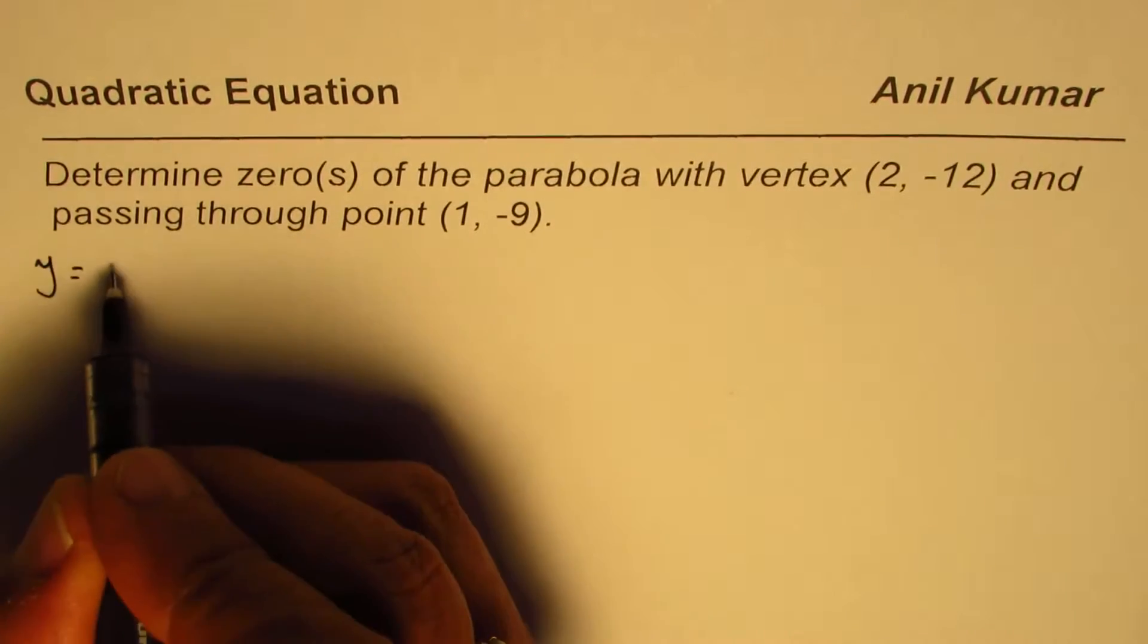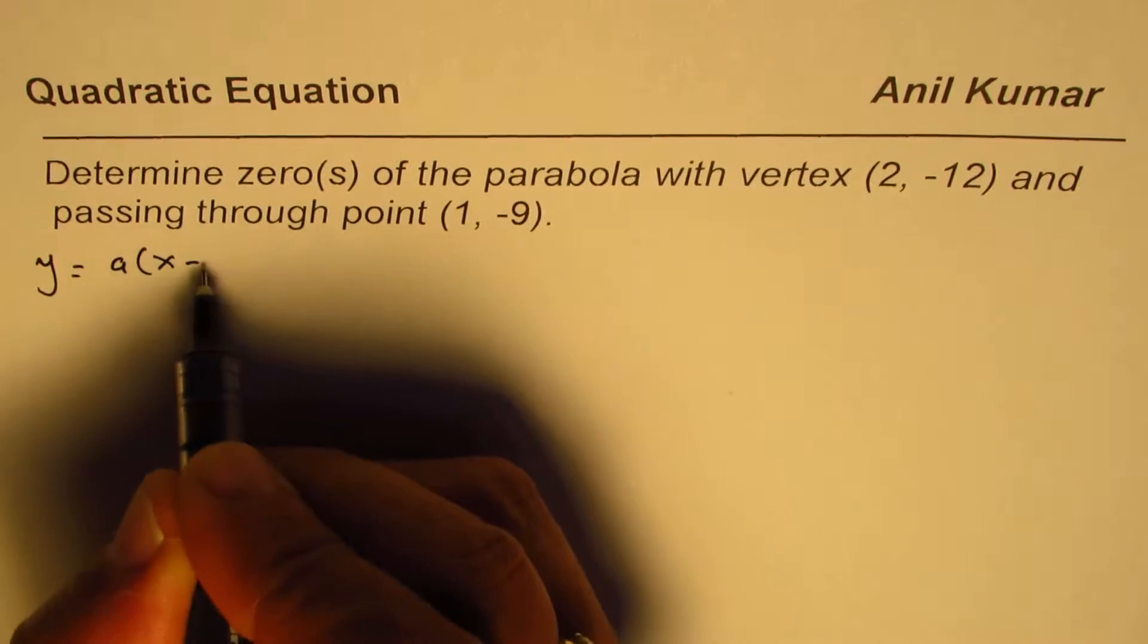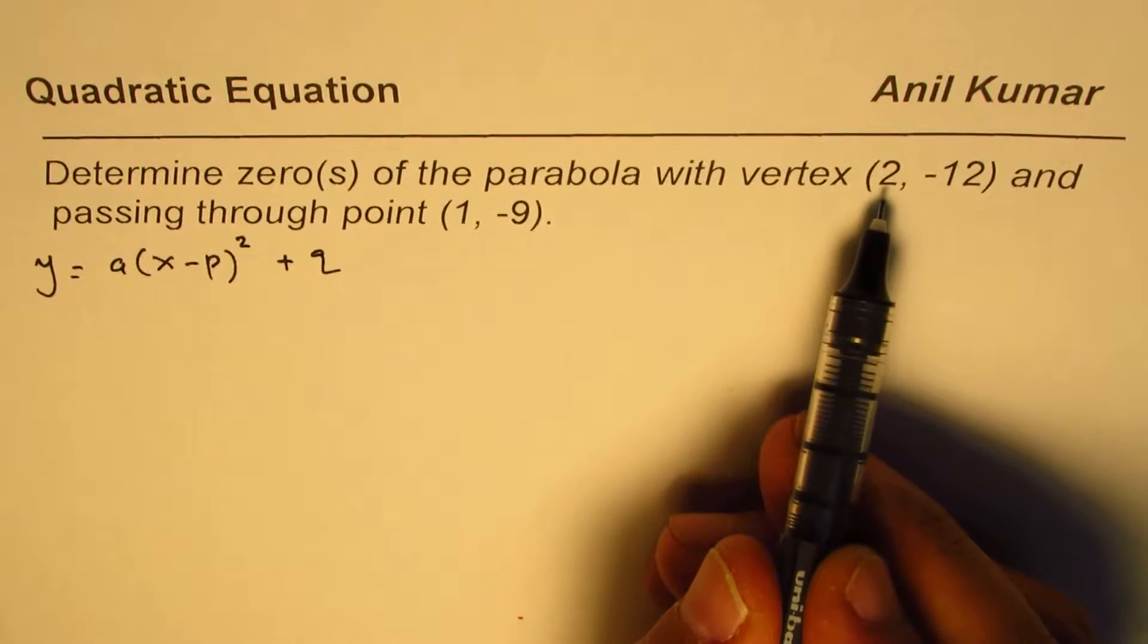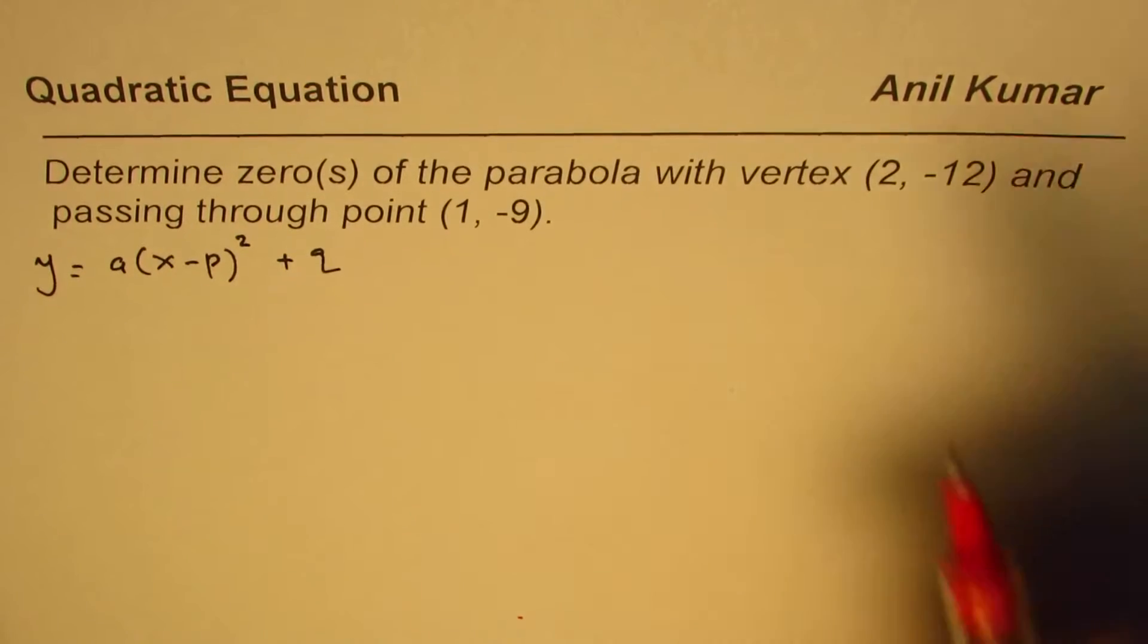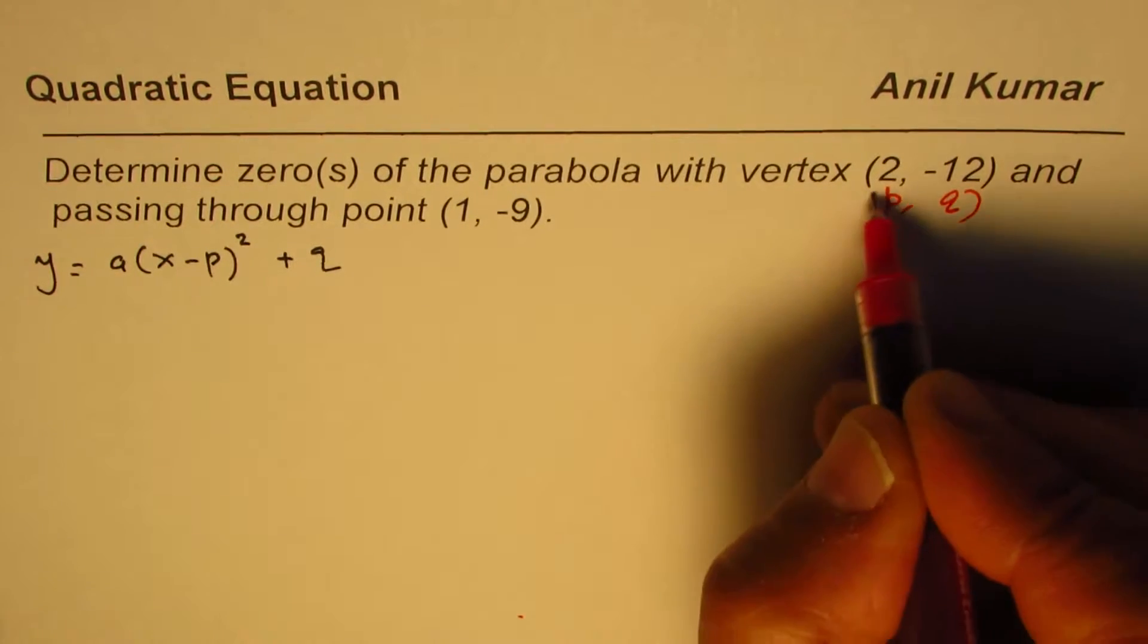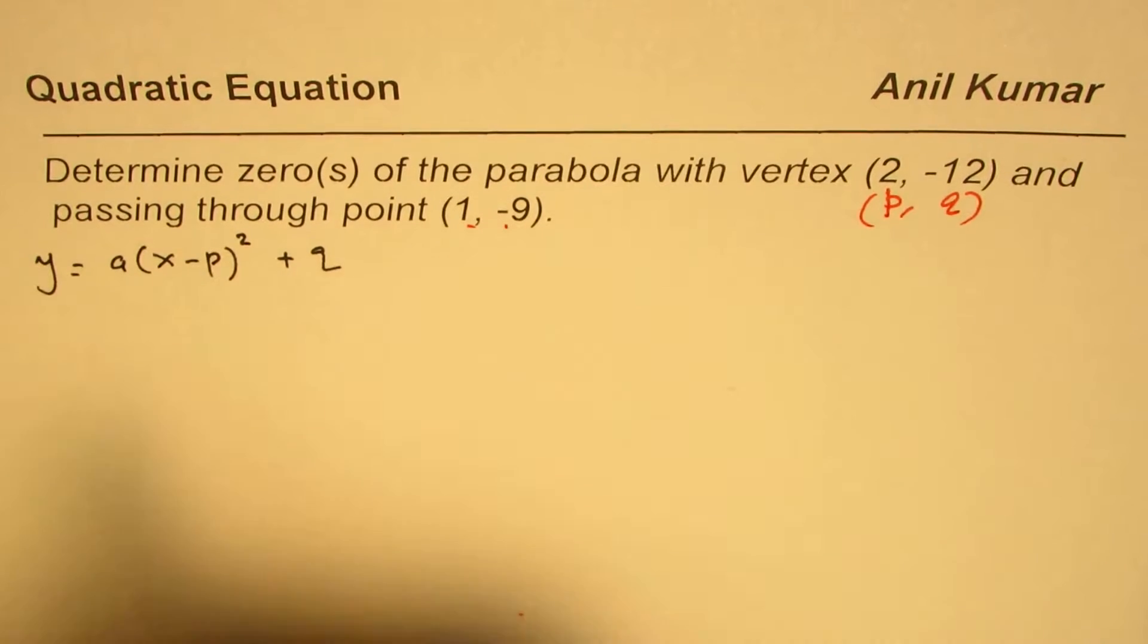The vertex form is y = a(x - p)² + q. Here we are given the vertex, so p = 2 and q = -12, and the point is given as (1, -9).